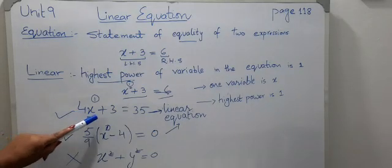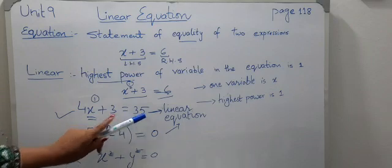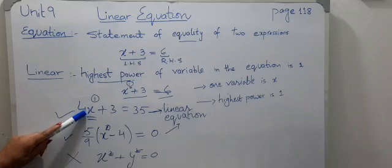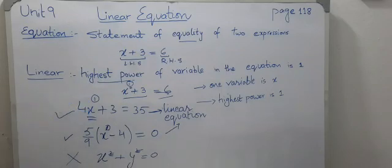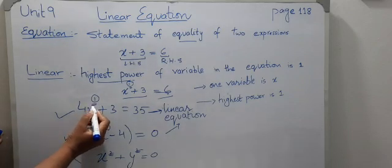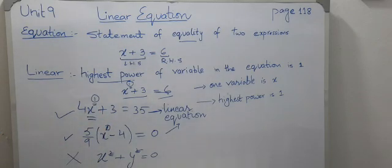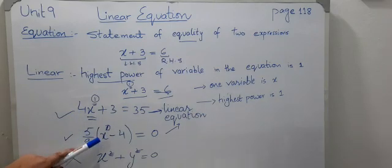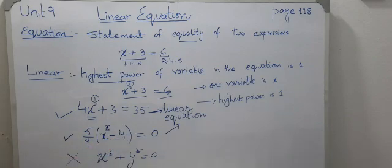One more example: 4x plus 3 equals 35. Here x is the variable and the highest power of x is 1, so this is a linear equation. Another example: 5 over 9 times (x minus 4) equals 0 — variable is x and highest power is 1.